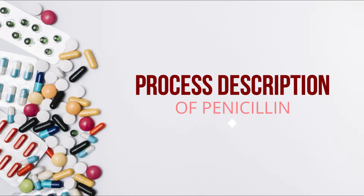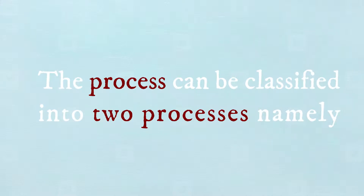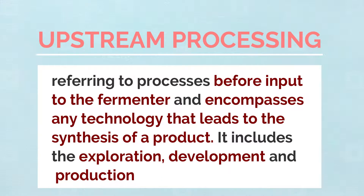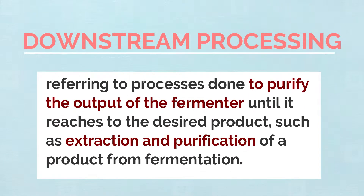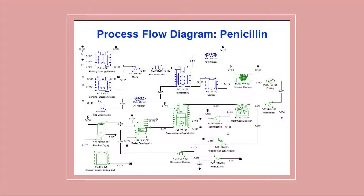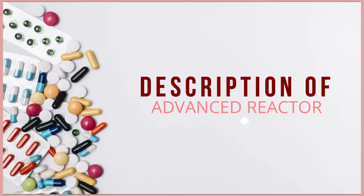Process description of penicillin. The process can be classified into two processes: upstream processing, referring to processes before input to the fermenter, which encompasses any technology that leads to the synthesis of a product, including exploration, development, and production; and downstream processing, referring to processes done to purify the output of the fermenter until it reaches the desired product, such as extraction and purification from the fermentation process.